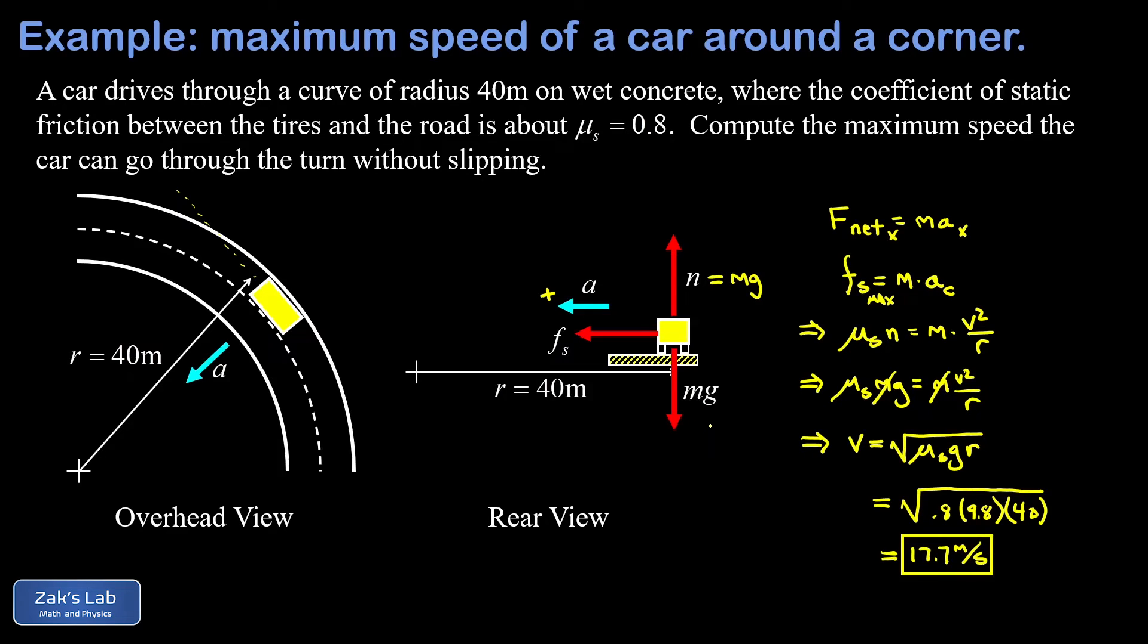So if we attempt to go around this corner any faster than 17.7 meters per second, we're going to exceed the maximum possible static friction force and the tires are going to begin to slip. We remember that the coefficient of kinetic friction is going to be less than the coefficient of static friction, so at this point we should have a major slip that takes us off the road.